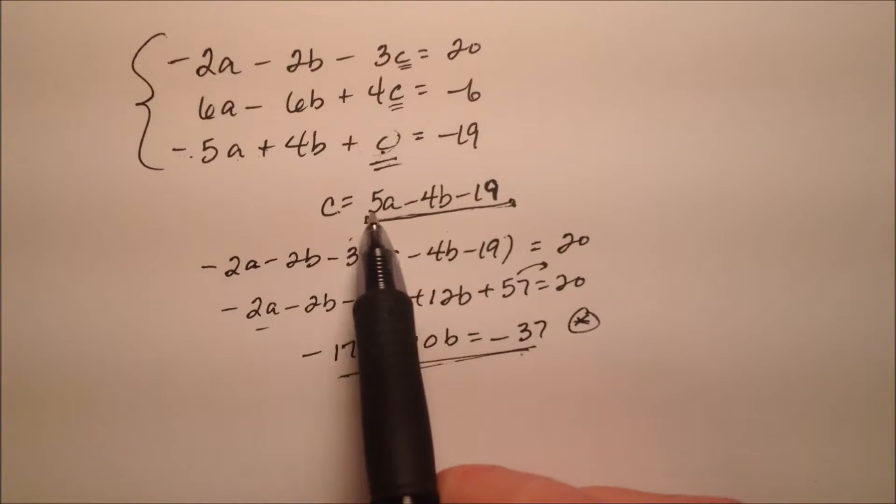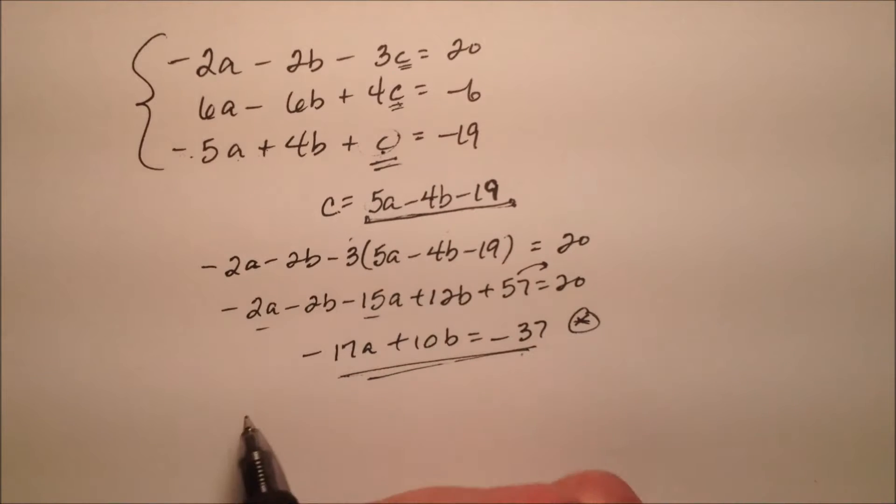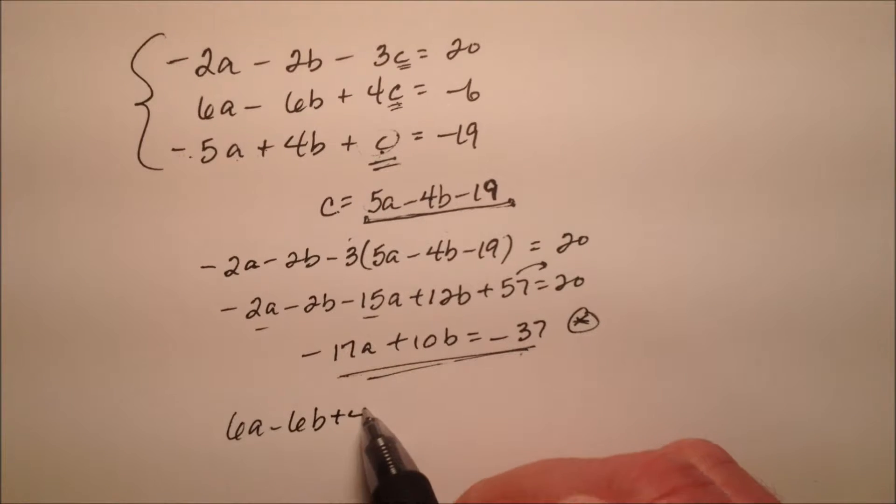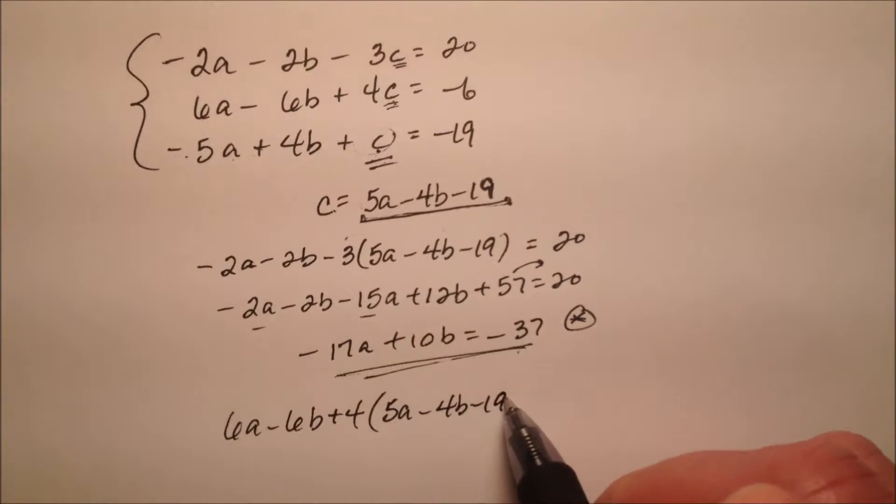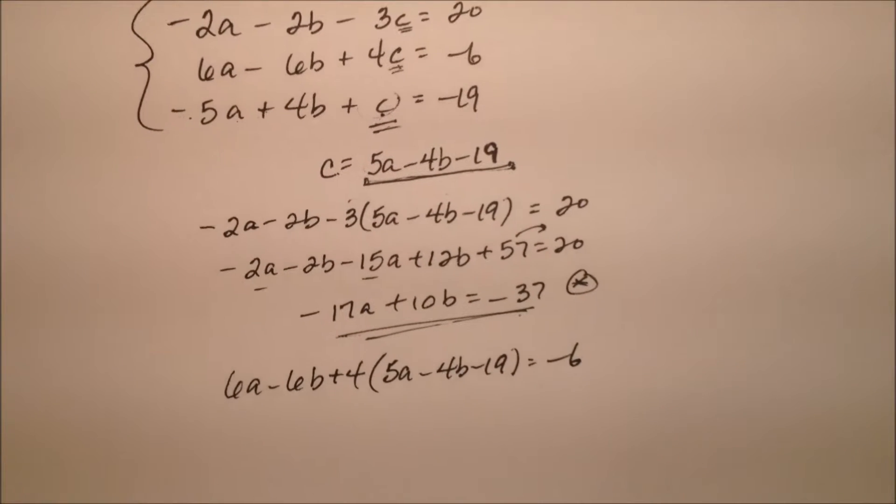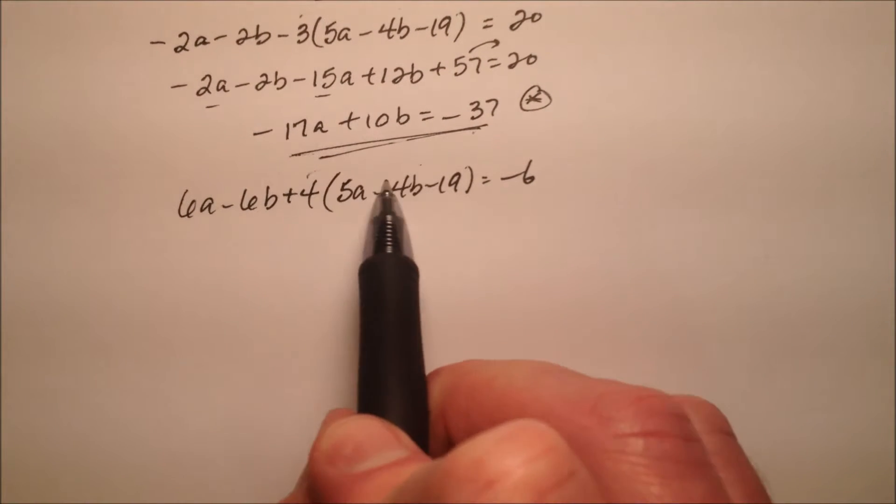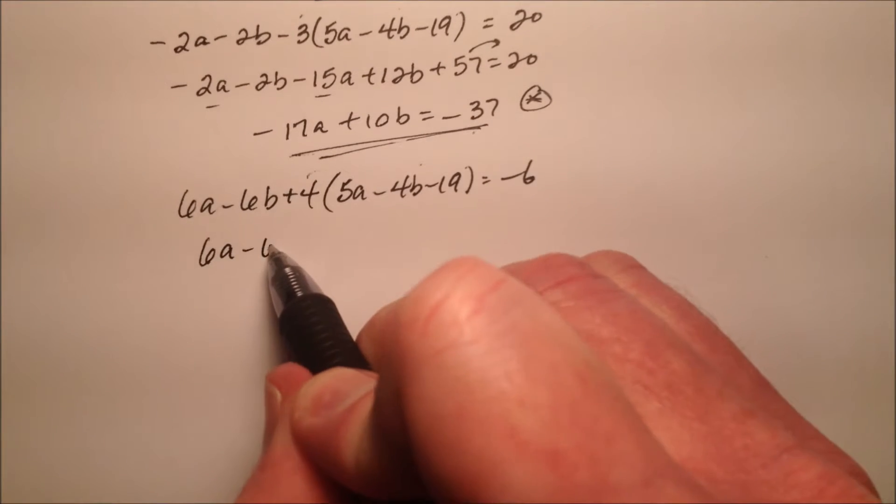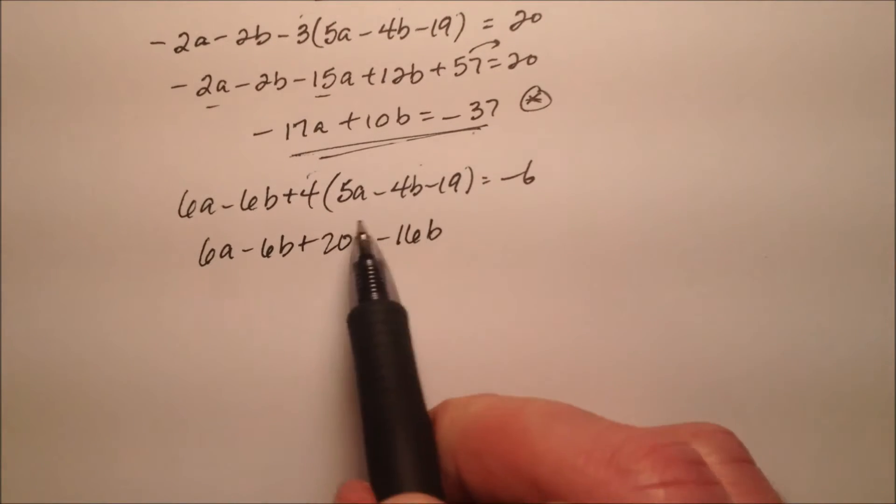Let's go ahead and take the same expression for c and dump it into the second equation. So 6a minus 6b plus 4c, but c is this right here, and that equals negative 6. I'll move up here so we have some room to work. Let's go ahead and distribute this 4 through, and then we'll combine like terms. So 6a minus 6b plus 20a minus 16b,